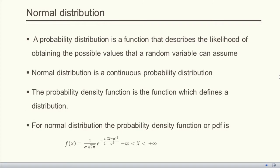A probability distribution is a function that describes the likelihood of obtaining the possible values that a random variable can assume. Normal distribution is a continuous probability distribution. The probability density function (PDF) is the function which defines any distribution. For normal distribution, the PDF is: f(x) = (1 / σ√(2π)) × e^(−(1/2)×((x−μ)/σ)²), where the random variable x can take any value between minus infinity and plus infinity. Here, μ is the mean and σ is the standard deviation of the distribution.